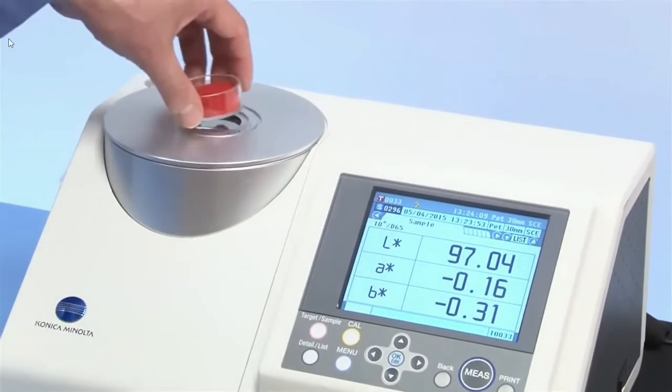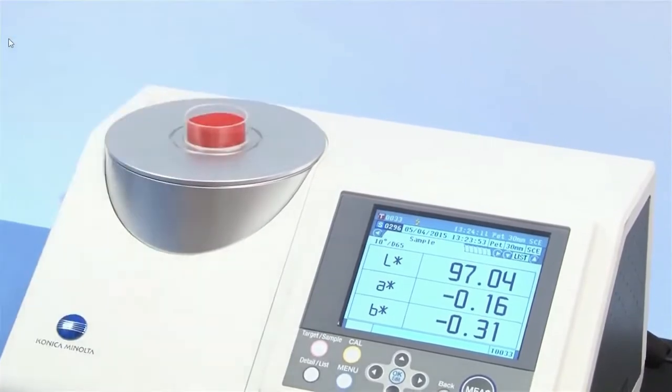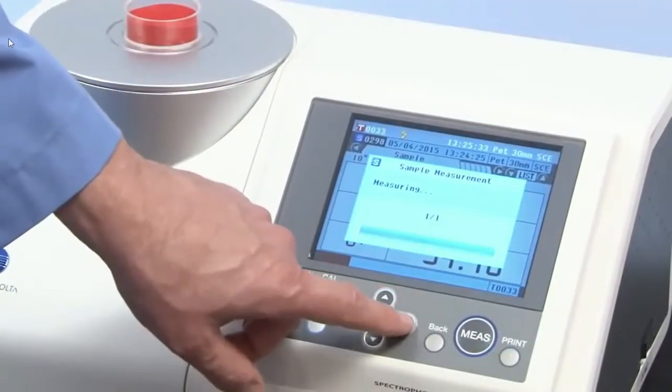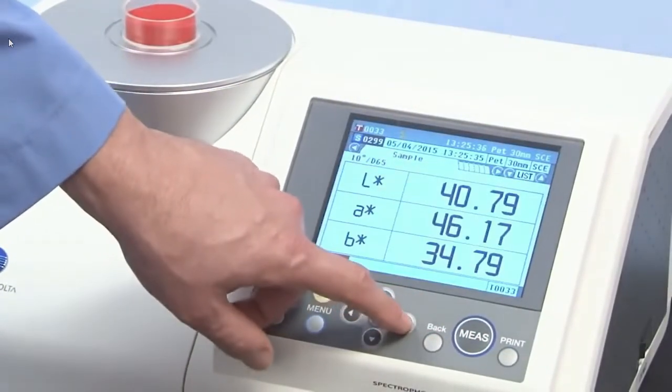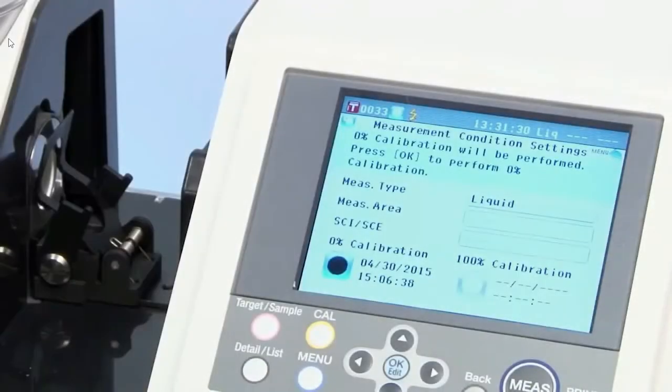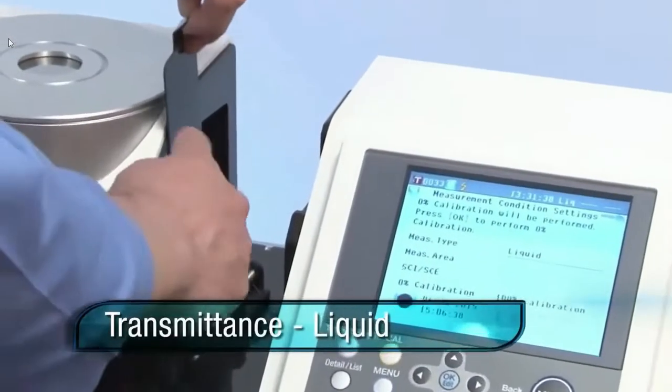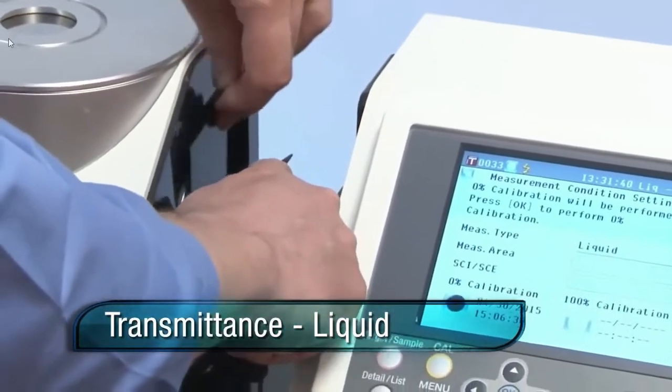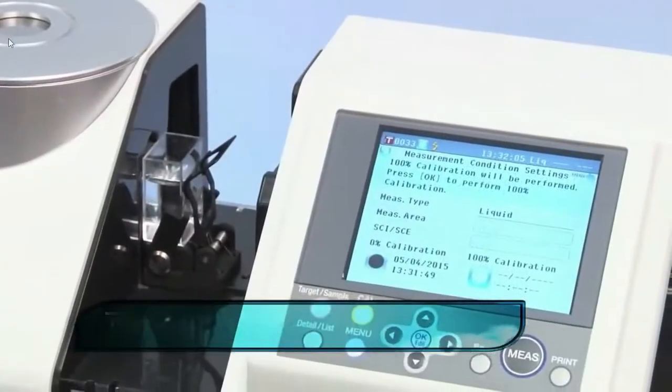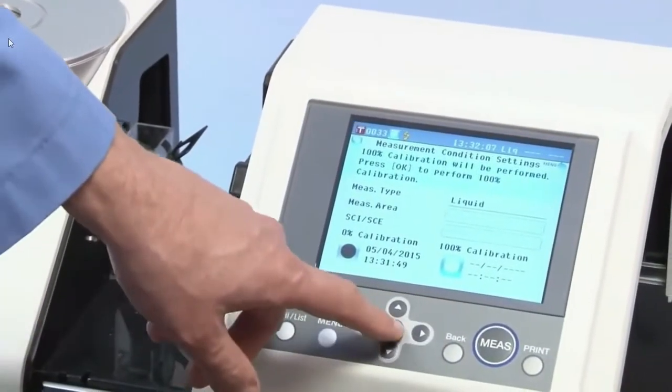The liquid mode will guide you through proper sample preparation, which includes zero calibration inside the transmittance chamber, as well as a simultaneous white calibration, clear water, and cell holder calibration procedure before measurement.